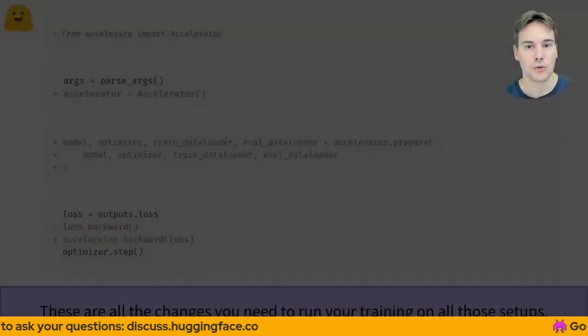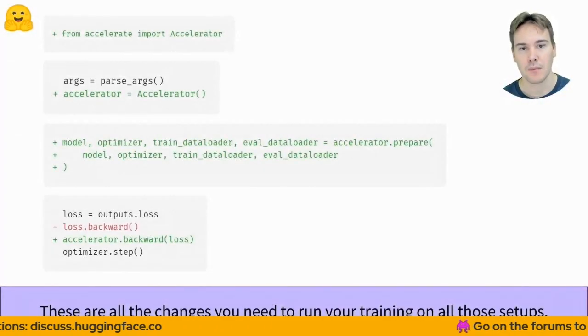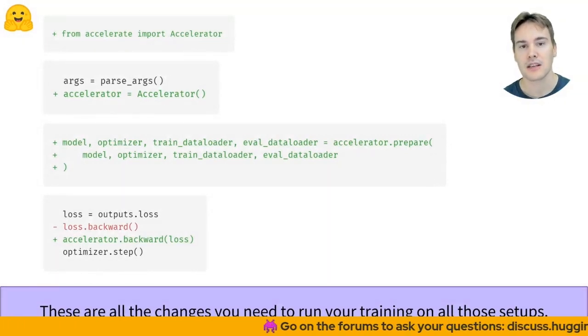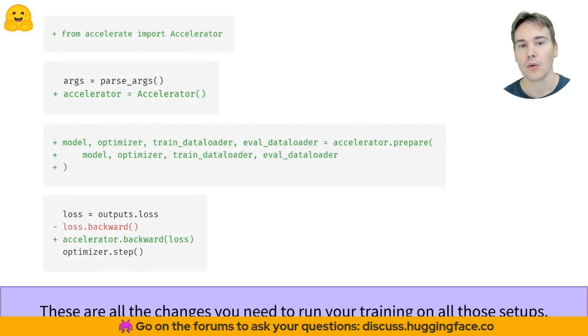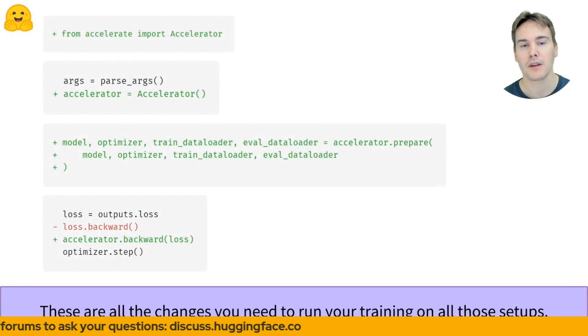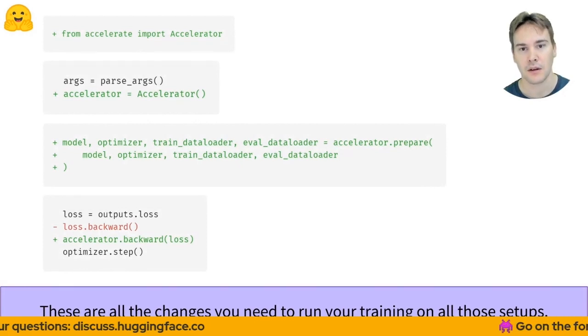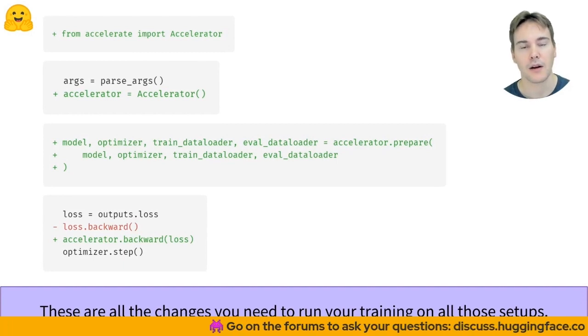The changes to your training loop are kept to a bare minimum. You need to import a new object called Accelerator, instantiate it at the beginning of your training script, then send all your main objects - model, optimizer, data loaders - to the prepare method of that accelerator. The last line to change is the loss.backward line which needs to become accelerator.backward loss.